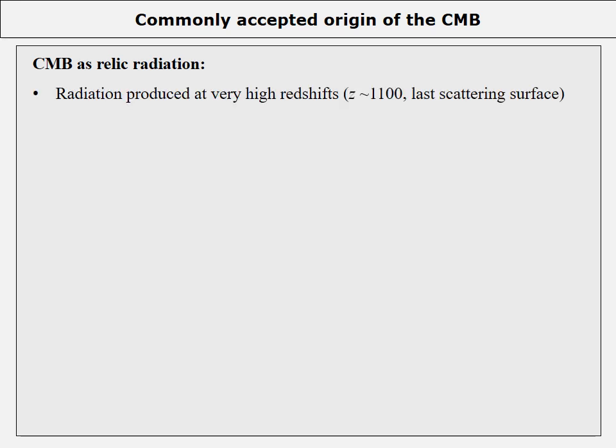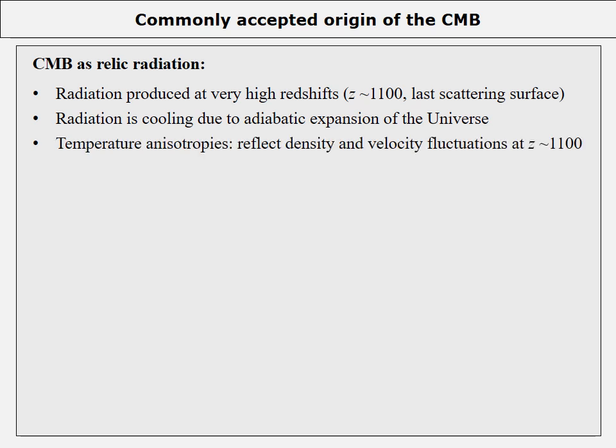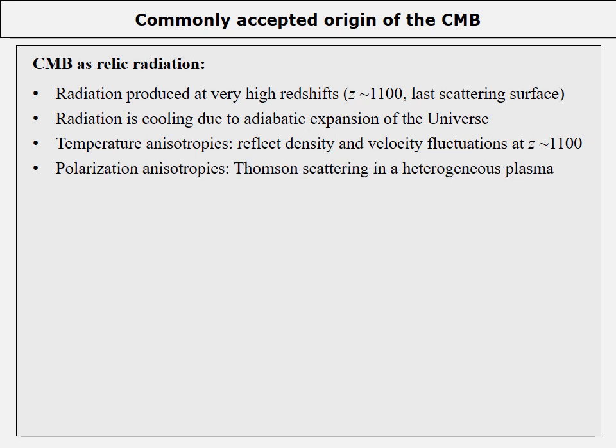The radiation was produced after the Big Bang at a redshift of about 1100, at the epoch called the Last Scattering Surface — a transition between opaque and transparent universe epochs. The CMB temperature was about 3000 Kelvin and photons decoupled from matter at this epoch. Due to adiabatic expansion, the temperature decreased to the 3 Kelvin observed today. Temperature anisotropies reflect random density and velocity fluctuations at the last scattering surface, and polarization anisotropies are assumed to be produced by Thomson scattering in a heterogeneous plasma. However, the theory is not fully consistent, and there are controversies, difficulties, and open questions.